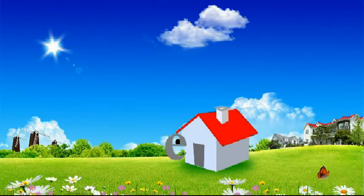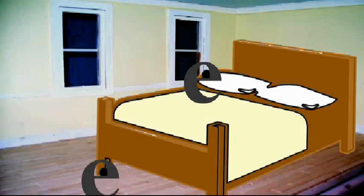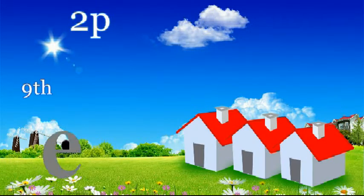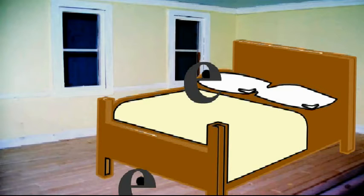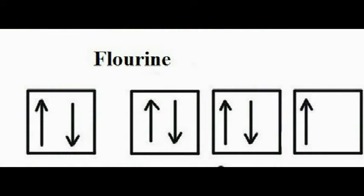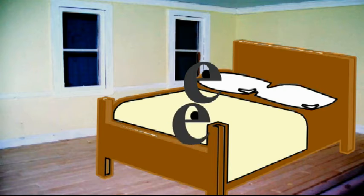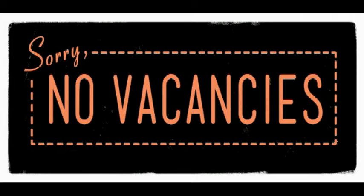Now the eighth electron comes. It finds 2s is full, so it has to settle by sharing the first room of 2p — this is oxygen. The ninth electron comes; the first room is full, so it shares the second room — this is fluorine. The tenth electron comes: first room full, second full, so at last it settles in the last room — this is neon. Now all the rooms are full, no vacancy, hence neon is again an inert element.